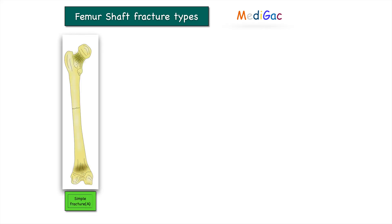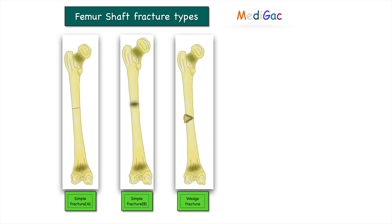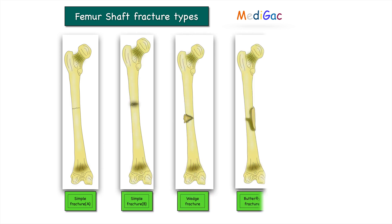Now moving to the types of shaft fracture. There are five types: simple fracture A, simple fracture B, wedge fracture, butterfly fracture, and comminution fracture.